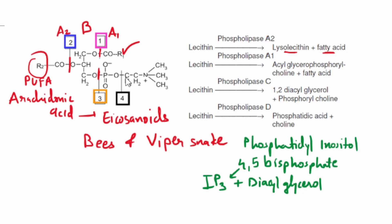Phospholipase D hydrolyzes the bond between phosphate and the nitrogenous base and forms phosphatidic acid and a polyene. The partially hydrolyzed products can be reused for synthesis of new phospholipids. Plant sources contain phospholipase D.